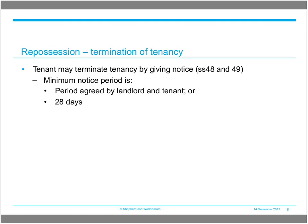Moving on to repossession, significant changes have been made in this area. There are three ways in which a private residential tenancy can be brought to an end. Firstly, the tenant can terminate the tenancy by giving notice to the landlord, as provided for in sections 48 and 49. There is a minimum notice period — either such period as may be agreed between the landlord and the tenant, or if there is no agreement, 28 days from the beginning of the period. Care must be taken to ensure that the provisions of the Act are complied with when issuing notices and calculating the relevant notice periods.